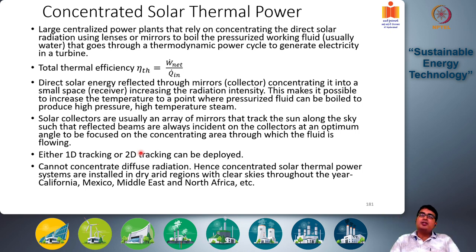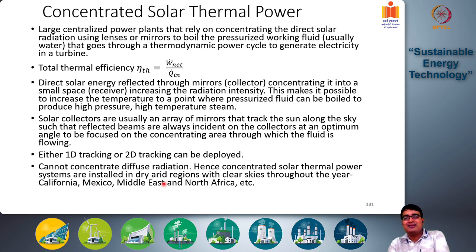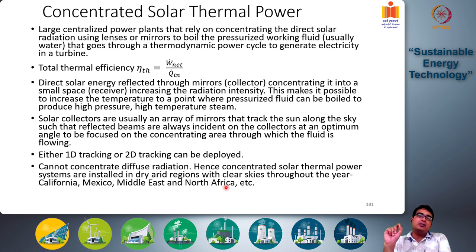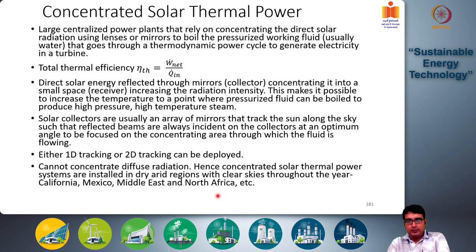Hence, concentrated solar thermal power systems are installed only in dry, arid regions with clear skies throughout the year. Only in such cases can these systems make economic sense. Unlike solar thermal water heater systems, these systems are geographically limited. Examples include California, Mexico, the Middle East, North Africa, and western India.